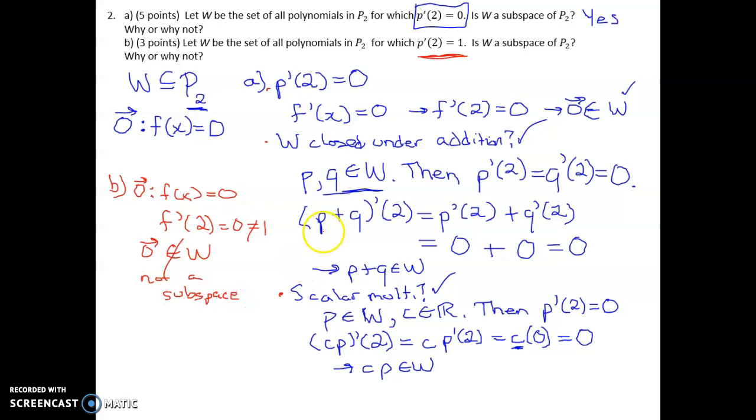I did want to point out, it also fails closure under addition. If you take any two elements of W, then that means that the derivative of each of these is 1. Q prime at 2 would also be 1. Well, then if you take P plus Q, take the derivative at 2, you're going to have 1 plus 1 this time. Where we had 0 plus 0 before, so that was 0. Everything worked out fine. Now it's 1 plus 1, so you get 2. So P plus Q does not belong in W.